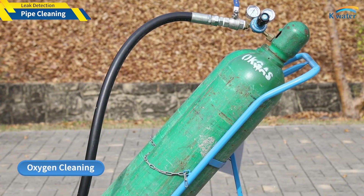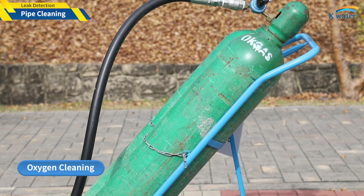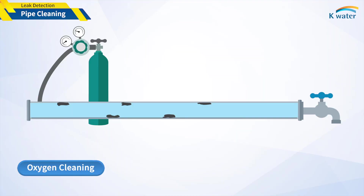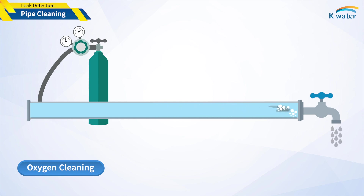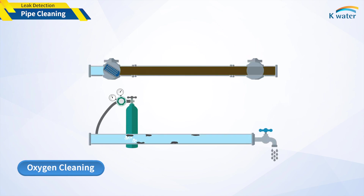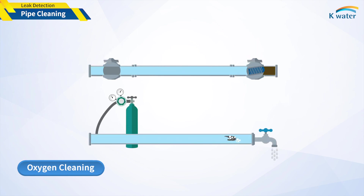What is the difference between oxygen cleaning and pigging? Oxygen cleaning quickly sprays high-pressure oxygen inside the pipe, and the turbulence generated removes sediments from the inner wall. Oxygen cleaning is less effective than the pigging method, but it has the advantage of low risk of damage or clogging of water pipes due to pigs.